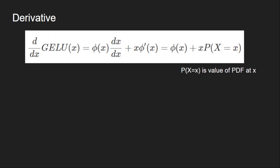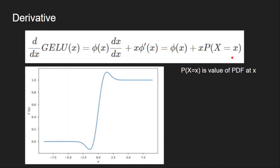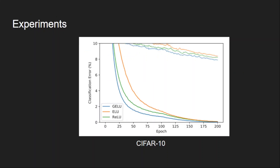Experiments were conducted on MNIST, CIFAR-10, and CIFAR-100 datasets to prove GELU performs better than ReLU and other variants. On CIFAR-10, GELU outperforms ReLU and ELU (Exponential Linear Unit) for both training and testing. As the number of epochs increases all three converge to the same point, but GELU converges much faster in the beginning.